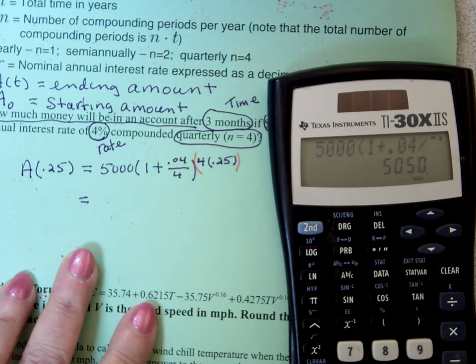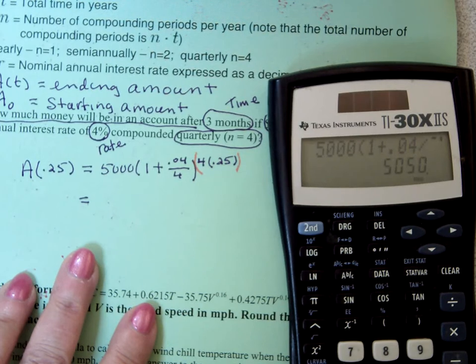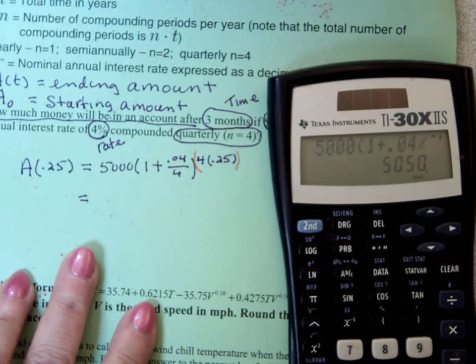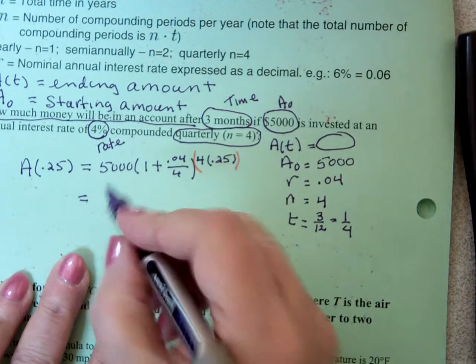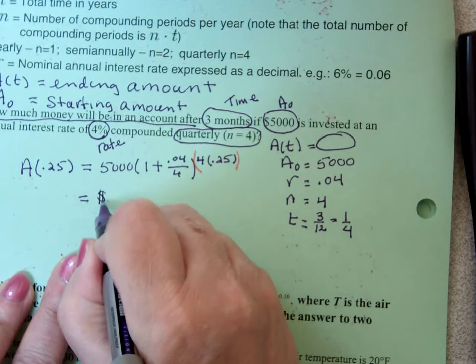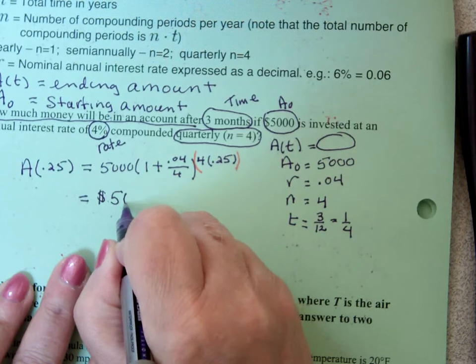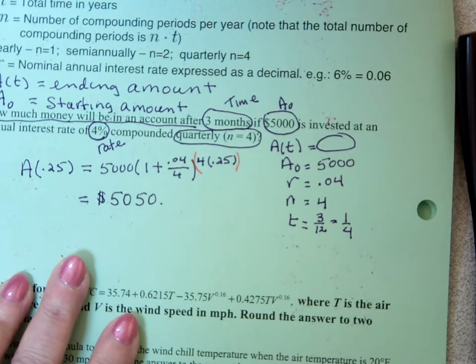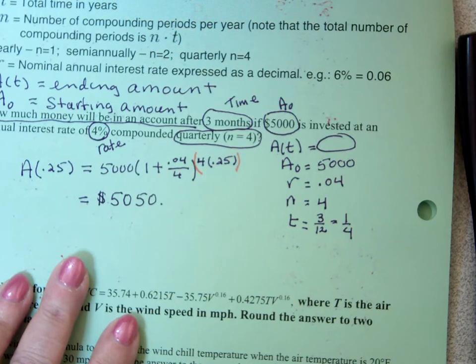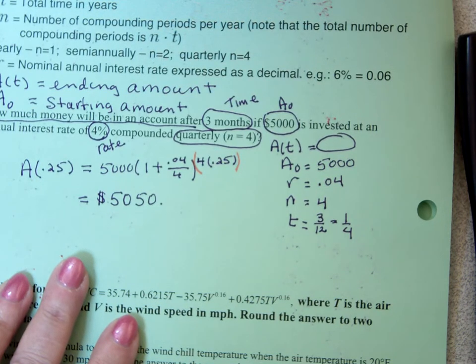So I got 50 bucks worth of interest at 4%. Tell me where you can get 4% interest these days. But if you could get 4% interest, I would have $50 in three months. So my answer would be $5,050 in the end after three months. That's not so bad, is it?